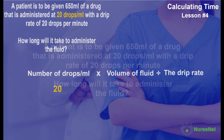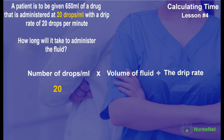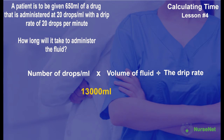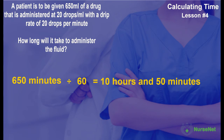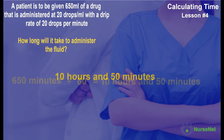Using our formula, we have 20 drops per milliliter multiplied by the 650 milliliter volume of fluid, which gives us 13,000. 13,000 divided by the drip rate of 20 drops per minute gives us a total time of 650 minutes. To convert this into hours, divide 650 minutes by 60, giving us a total of 10 hours and 50 minutes.